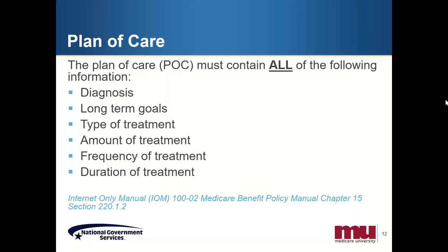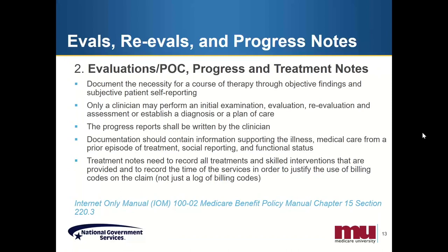The documentation of the course of therapy needs to be assessed with the objective findings that the beneficiary has. I would admonish you to avoid generalization of terms such as decreased range without giving specific measurements, or that they have a decline in function, or decreased strength or loss of balance. Those are very general and nonspecific. Rather, use objective findings — the specific range of motion that has changed. Even when using subjective assessments, which we all do when working with patients, you still need to verify them.